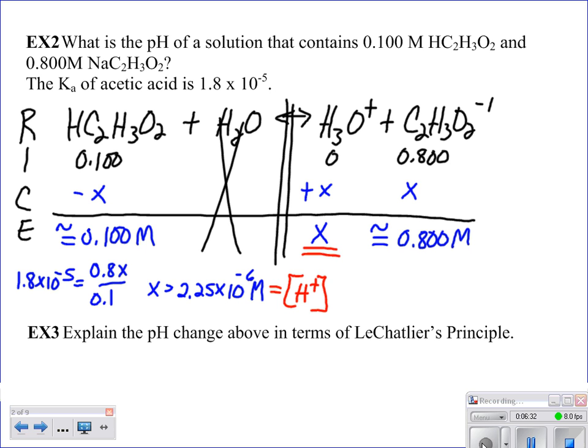So now when we plug that in and we say pH equals the negative log of 2.25 times 10 to the negative 6th, we get a pH equal to 5.65.